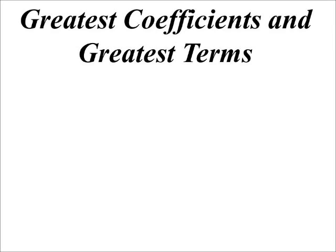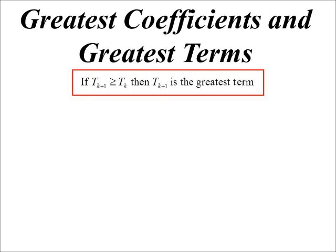We're going to look at a specific type of question where we want to find in a binomial expansion what would be the biggest coefficient or the biggest term. When we talk about the greatest coefficient, we're not worried about plus or minus—it's the magnitude we're interested in. It's just a simple idea: if we compare coefficients and if term k+1 is bigger than term k, then term k+1 must be the biggest. We can create an inequality to solve the problem.